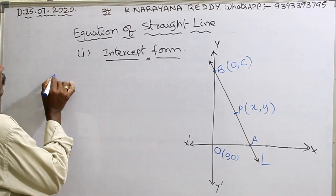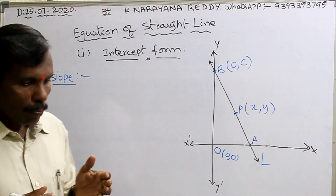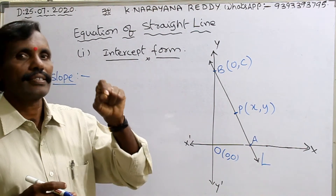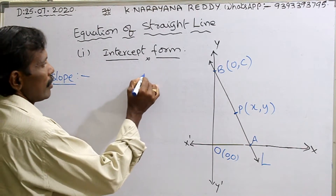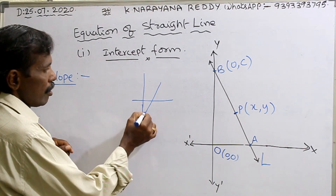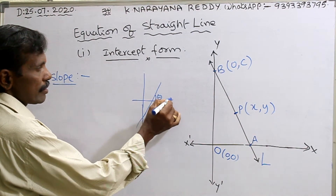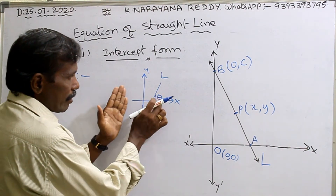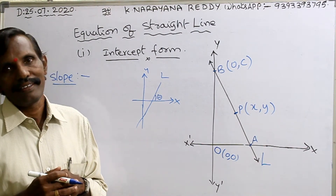But what is meant by slope? Generally, slope can be called as M. Actually this can be called as theta — that means angle. This is a graph with any line making an angle theta with the x-axis. This is line L. Making an angle theta — this angle is called slope of a line, slope of L.